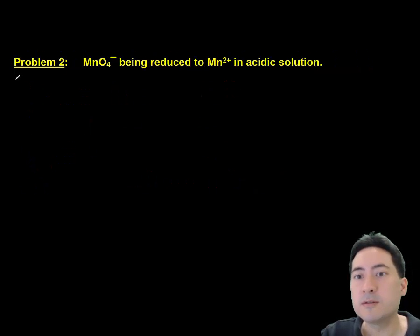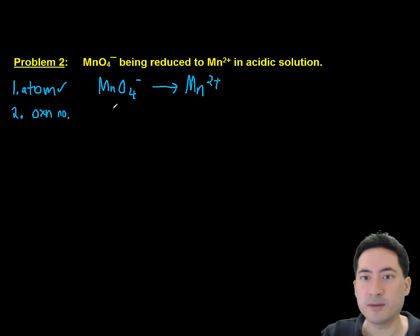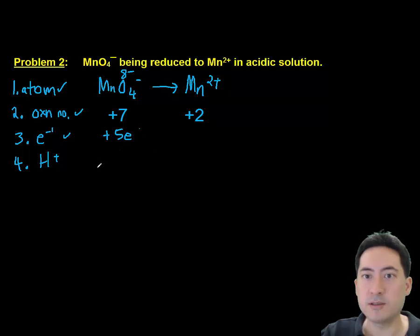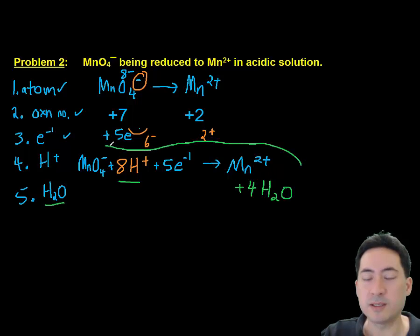The atoms are already balanced. The oxidation states are the same. That should have a plus at the front. You can see it's +2 to +3, so I need to add one electron. That gives us the balanced half-reaction. Problem 2: permanganate reduced to manganese iron in acidic solution. The ions are already balanced. The oxidation number is +7 to +2, putting the plus first. We need 5 electrons on the left-hand side. That requires us to balance the charges.